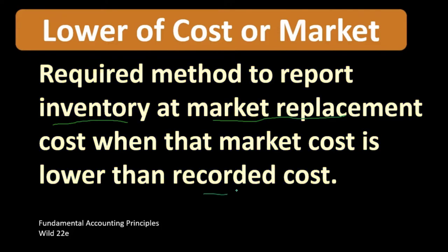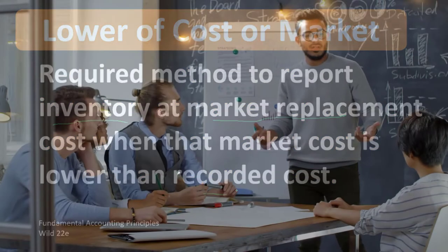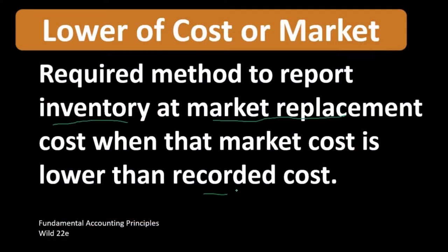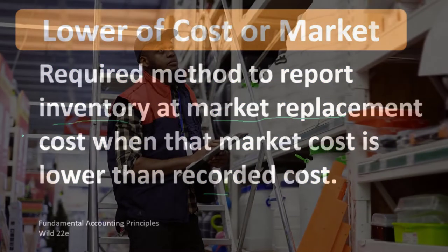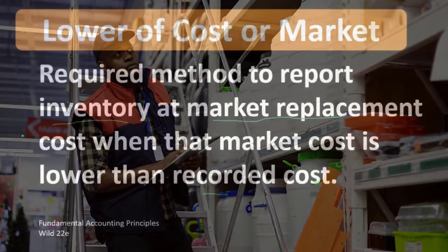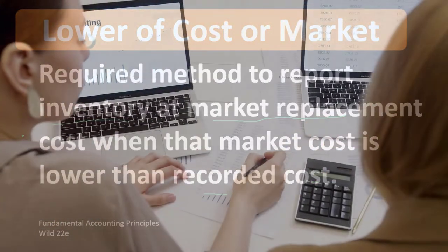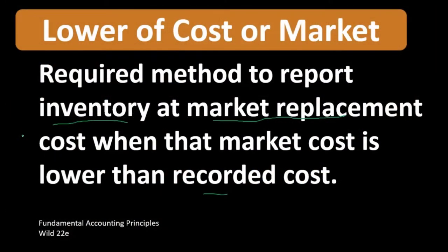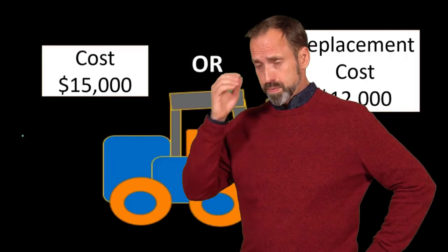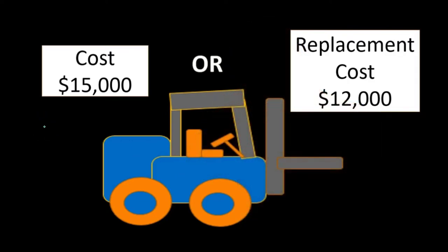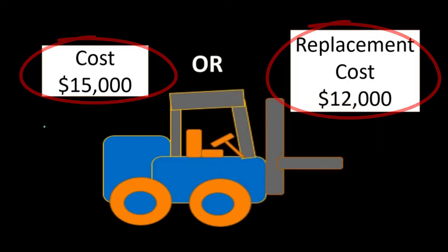Regulations are very concerned about overstating an asset and making financial statements look better than they are, rather than understating it. Therefore, we want to default to under-recording the inventory rather than overstating it, and record it at the lower of cost or market value. To apply this, if you see problems like this, they're going to give you basically two numbers to compare, and it's as easy as picking the smaller number.